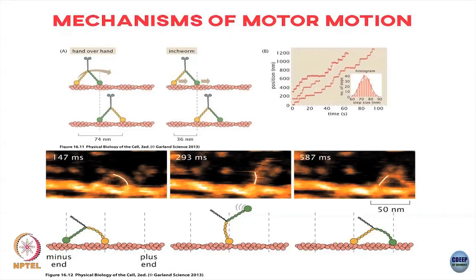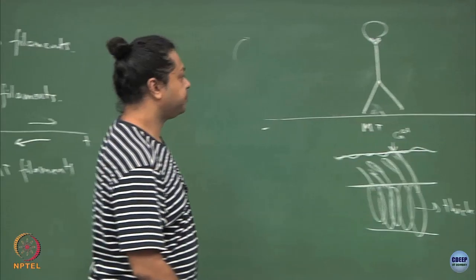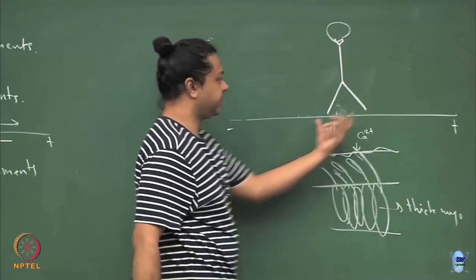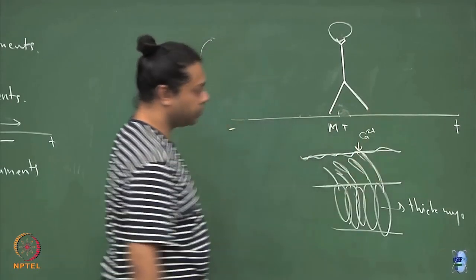For example, I have these two head domains of my motor that bind to the filament. Let me draw it a little bigger. These are my two head domains and then here is a cargo binding domain. Now how do these head domains move when it works?